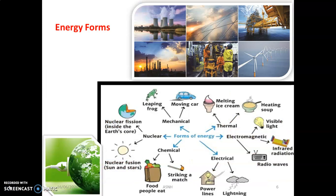There are many forms of energy: mechanical energy, thermal energy, electromagnetic energy, electrical energy, chemical energy, and nuclear energy. Examples of thermal energy include melting of ice and heating soup. Electromagnetic applications include visible light, infrared, and radio waves. Examples of electrical energy include power lines and lightning. Chemical energy examples include food and metabolic activities, and striking a match. Nuclear energy involves nuclear fission and fusion in nuclear power plants. Mechanical energy examples include a moving car and a leaping frog. These are some important forms of energy included in thermodynamic concepts.